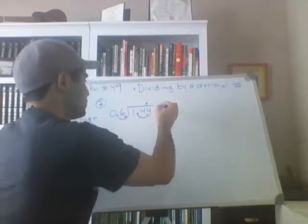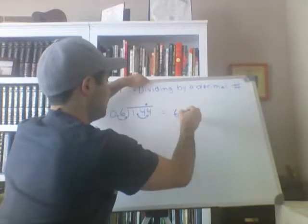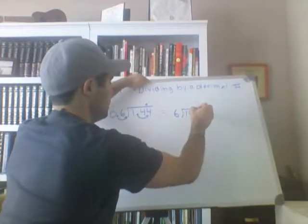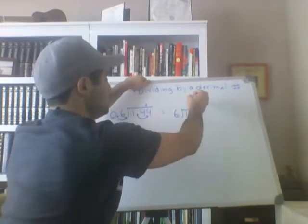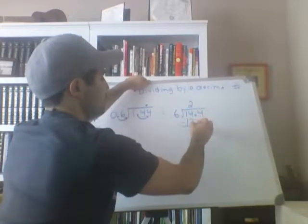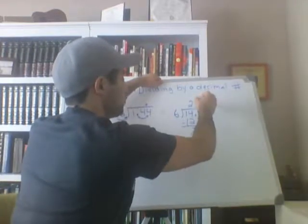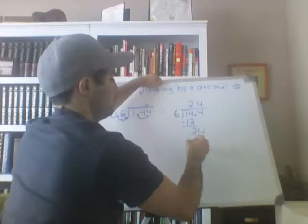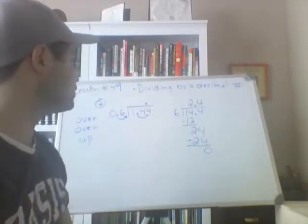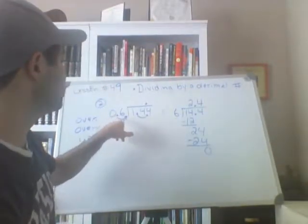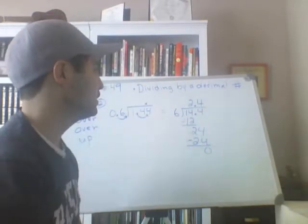Once I've moved the decimal, you're going to get an equivalent division problem, which is 14 and 4 tenths divided by 6. 6 will go into 14 two times. 2 times 6 is 12. Subtract — you're going to have a remainder of 2. Bring down your 4. 6 will go into 24 four times. 4 times 6 is 24. Subtract — 0. So now we've got to move the decimal straight up. The answer to this is 2.4. We moved the decimal over, over, got our new division problem, and then moved the decimal straight up.